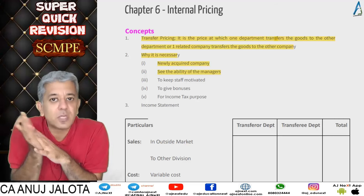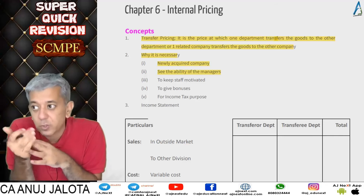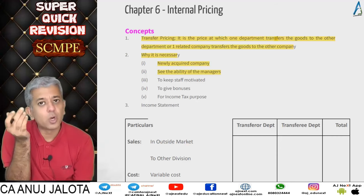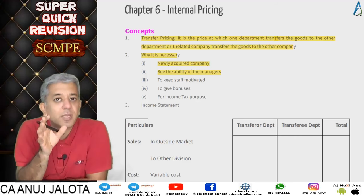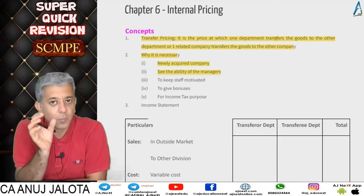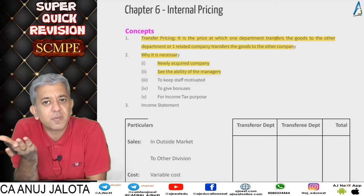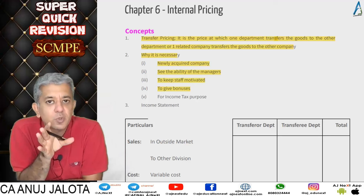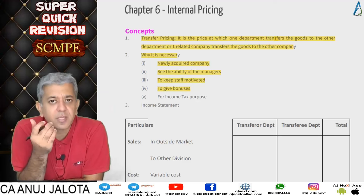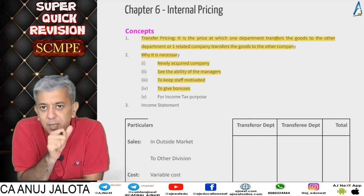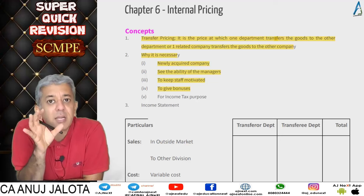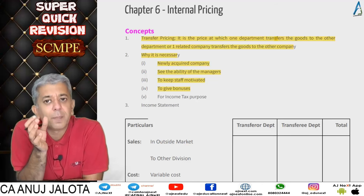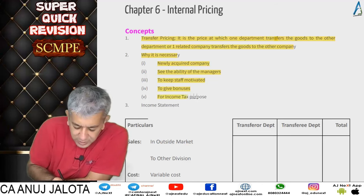How do you evaluate a department? One way is to see how much profit each department earned. A department may sell goods in the market and also transfer goods to the next department. When transfer happens, a transfer price comes in, and with that, a profit element appears. Based on that profit, we evaluate and can give bonuses — say 10–15% of departmental profit as bonus to keep staff motivated.